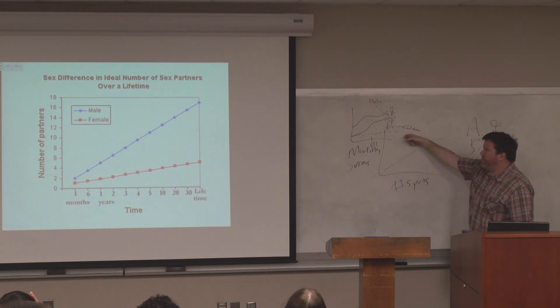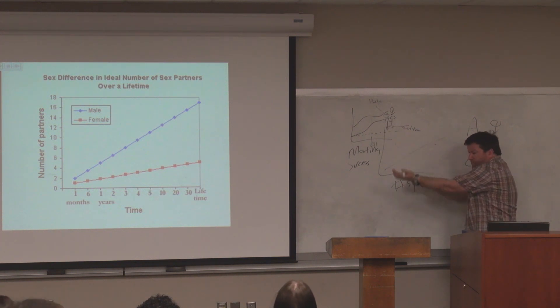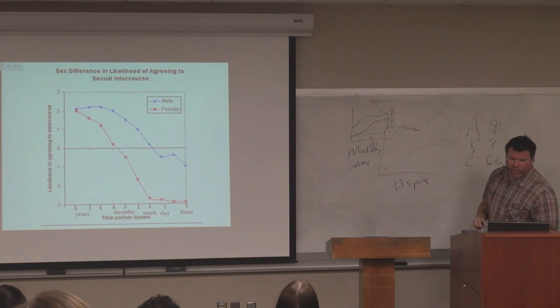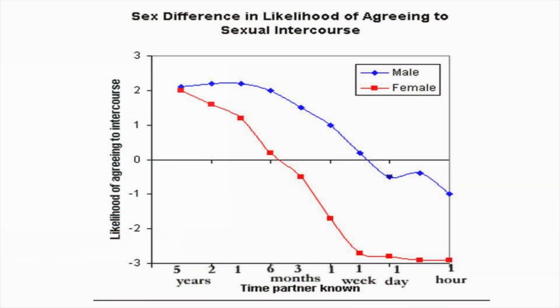So when we're trying to work out all these things we have to go, what role does biology play? What role does culture play? What role does time period play? What role does religion play? All of these variables play. I'll give you all one more. This is likelihood of agreeing to sexual intercourse. So they asked males and females, how likely would you be to agree to sexual intercourse?